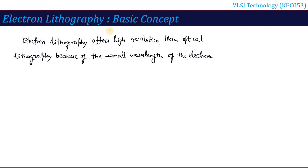Electron lithography — what is the basic concept? Electron lithography offers high resolution compared to optical lithography because the electron wavelength is small compared to light, specifically UV exposure. That is one of the main advantages of electron lithography. However, if there is an advantage, there are also disadvantages: the process is costly, as the device cost is much higher compared to optical lithography. So, it is advantageous over normal photolithography because it offers high resolution due to the small wavelength of electrons.